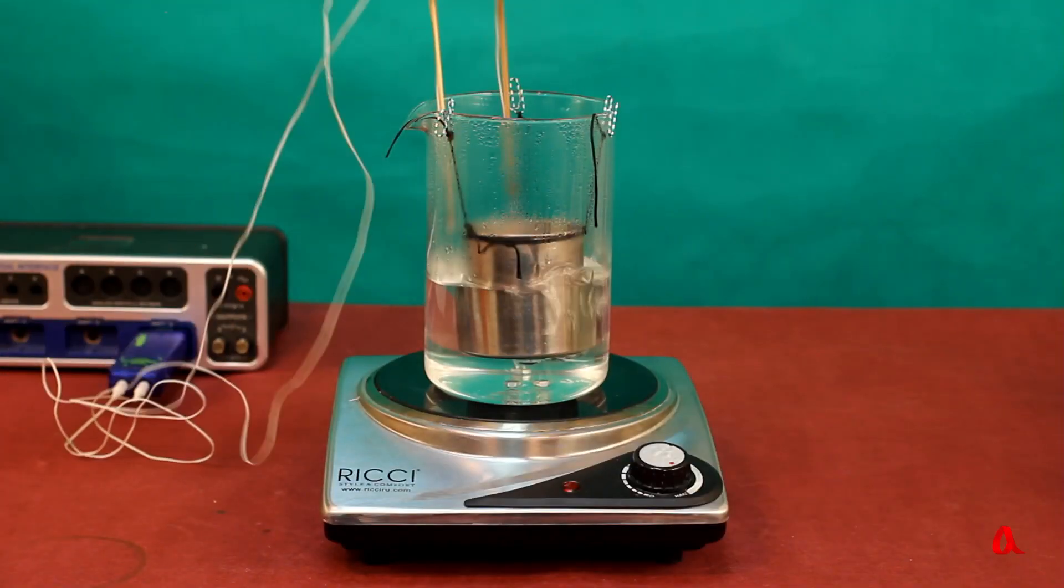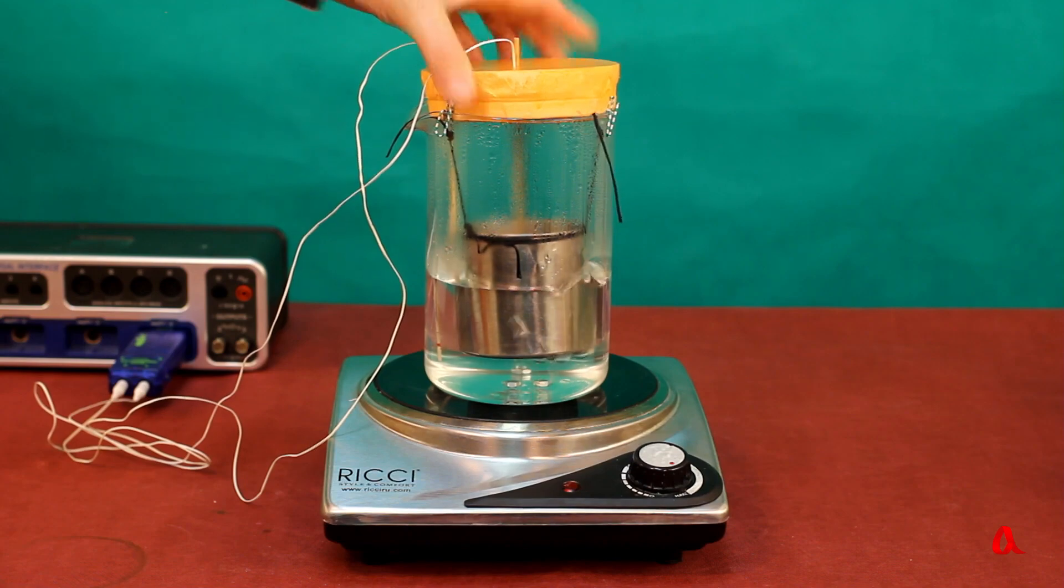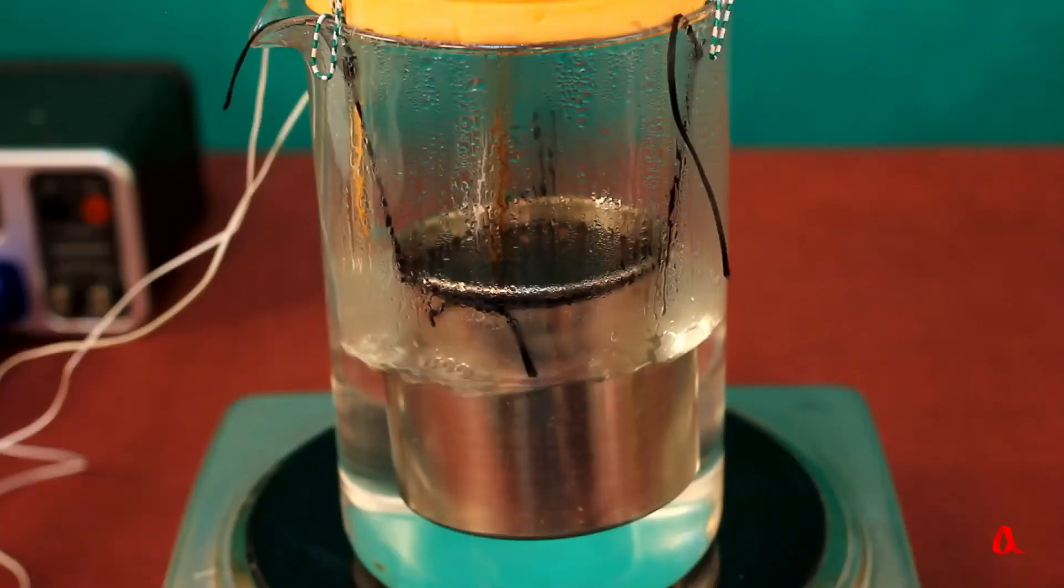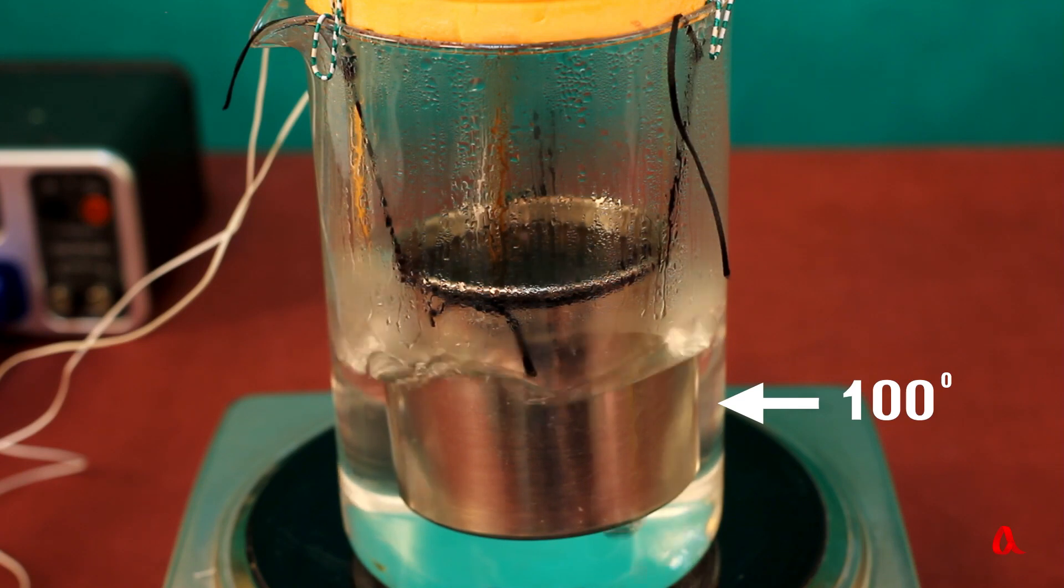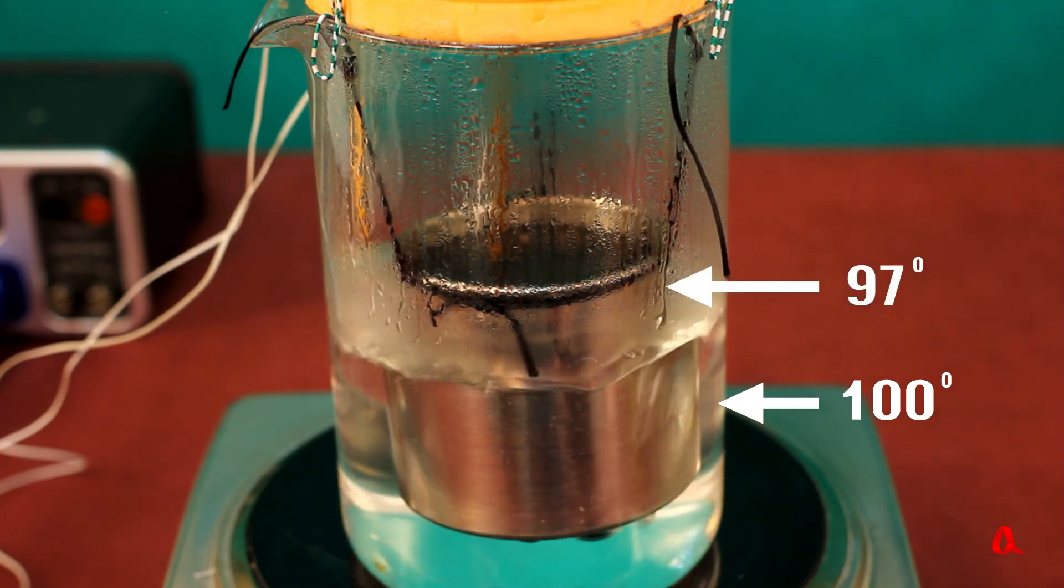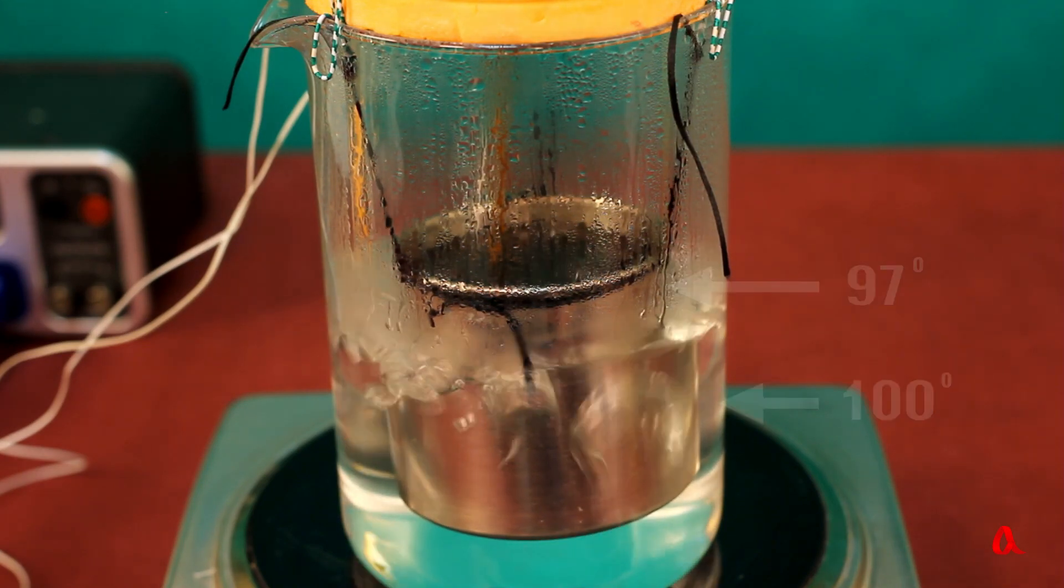Let's have a look at the temperature sensor marks for the beaker and the mug. The water in the beaker has been heated up to 100 degrees, while the water temperature in the mug is only 97 degrees. Why is that?